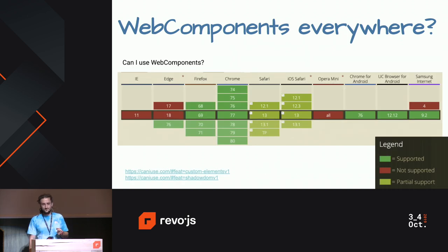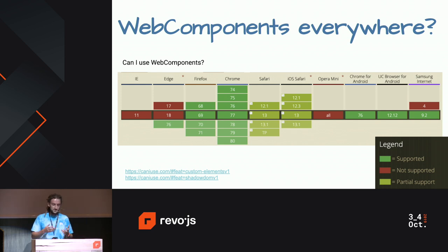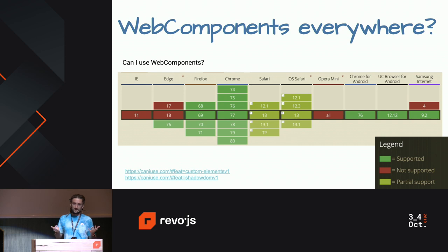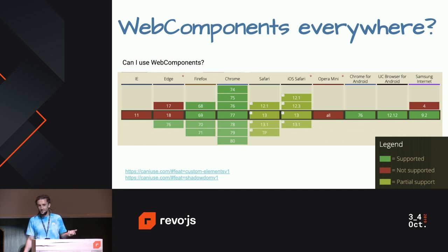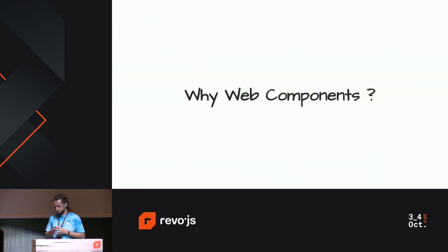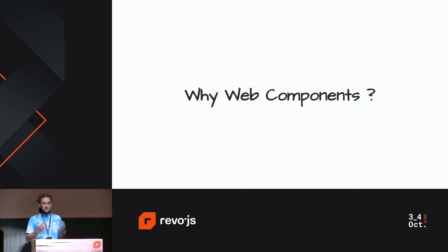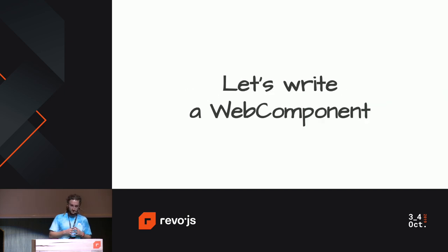So why only 6%? Maybe there is not good browser support. According to caniuse.com, all those evergreen browsers are in green — so it's very well supported, except if you want to support Internet Explorer, current Edge, or Opera Mini. To better understand why web components should replace our frameworks and be everywhere, we need to understand what problems they solve. And there is no better way to learn than getting our hands dirty — so let's write a web component.